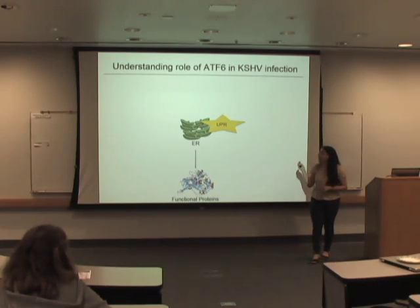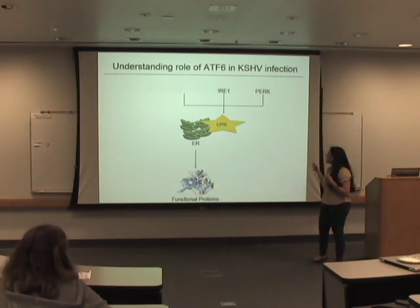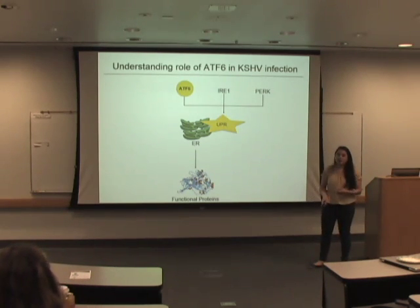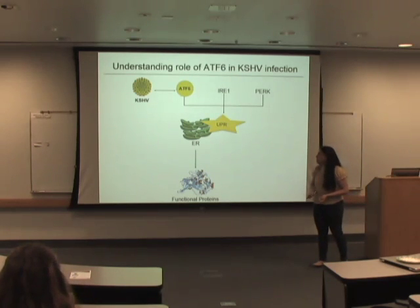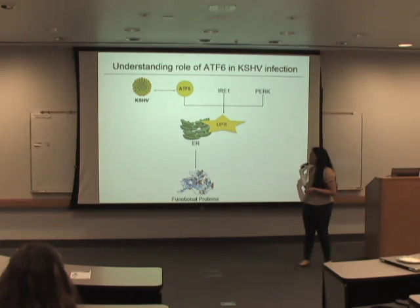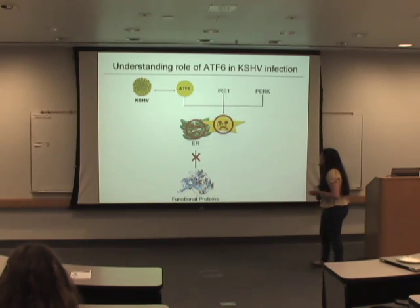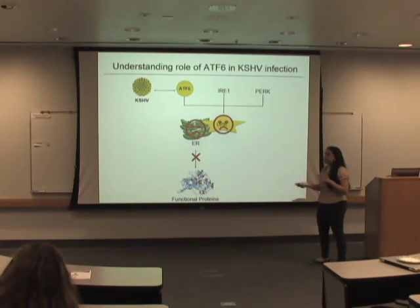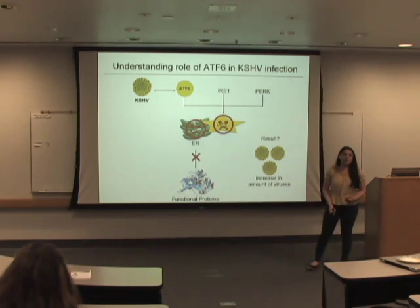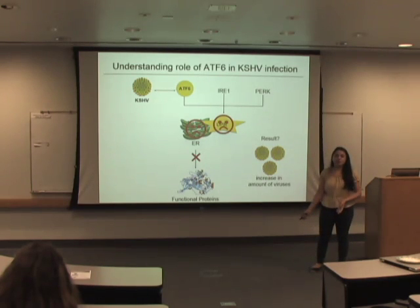The UPR is controlled by three main supervisors: PERK, IRE1, and the one I'm looking at, ATF6. These are all proteins — the supervisors of the UPR. You can think of the virus, KSHV specifically, as a corrupt supervisor whispering into ATF6, saying 'everything's okay' when everything really is not okay. Preliminary data has shown that if you block ATF6 function, you have an increase in the amount of viruses — meaning the ER, instead of being a factory for cell proteins, is now becoming a factory for viral proteins.